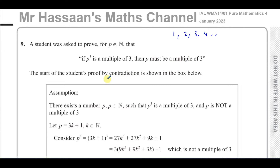So if you have a natural number and you cube it and the answer is a multiple of 3, then the original number must also be a multiple of 3. That's what we have to prove by contradiction. The start of the student's proof by contradiction is shown in the box below.